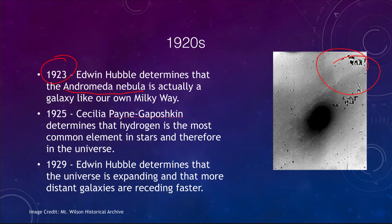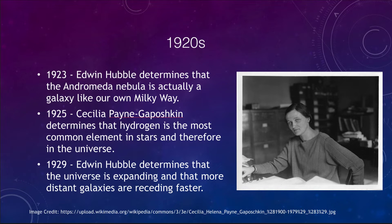Prior to 1923, we did not know for sure that galaxies like Andromeda — what were called spiral nebulae — were actually galaxies like our own. In 1925, Cecilia Payne-Gaposhkin showed that hydrogen is the most common element in the universe. Her analysis of spectral lines showed that the abundances of hydrogen were tremendous. This was very difficult to accept at the time, and she even had to put a disclaimer saying it could not possibly be correct — but it turns out that it was.